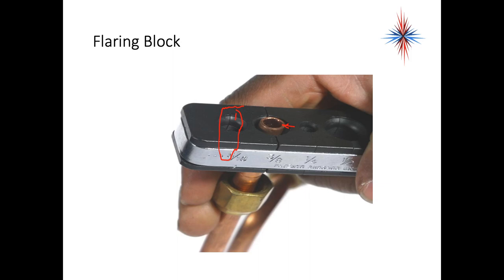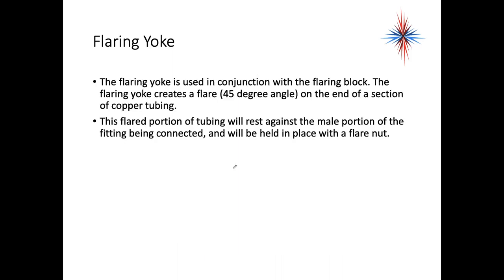The width of a quarter or nickel is a good measurement of how far that sticks out. Don't forget to put the flare nut on before you put this into the flare block. Once you flare that pipe, you can no longer get the flare nut on it. The flaring yoke is used in conjunction with the flare block.